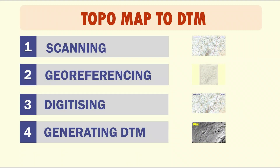I summarized the main stages for converting the paper map into a digital terrain model in four main stages: the first one is scanning, the second one is georeferencing, then digitizing, and finally generating the digital terrain model, which is our aim.